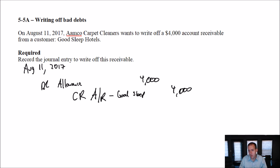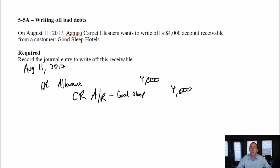But to write off a bad debt — long story short — debit allowance, credit accounts receivable for whatever amount has gone bad, whatever amount we're wanting to write off. All right, that's it for this one. Stay tuned for the next one, which I think will be a record — it's going to be fast.